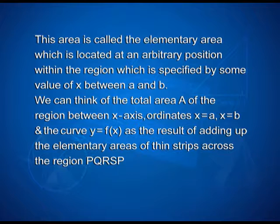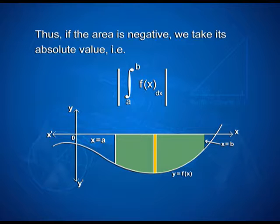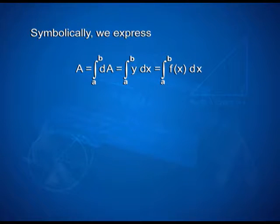It is only the numerical value of the area which is taken into consideration. Thus, if the area is negative, we take its absolute value — that is, the modulus of the integral from a to b of f(x) dx. Symbolically, we express A = ∫(a to b) dA = ∫(a to b) y·dx = ∫(a to b) f(x) dx.